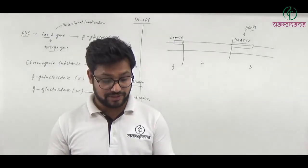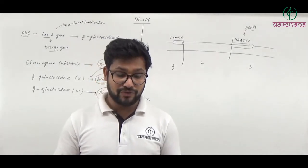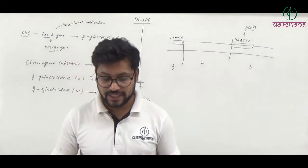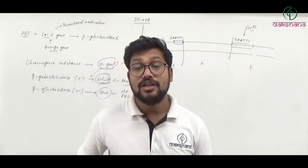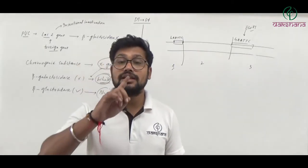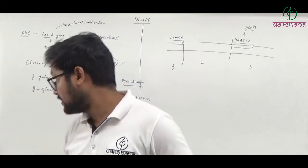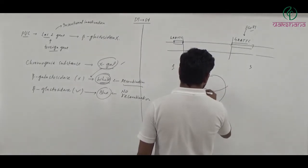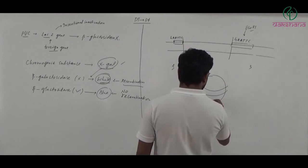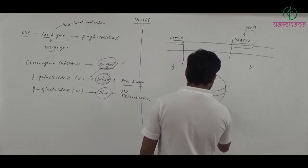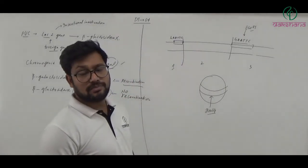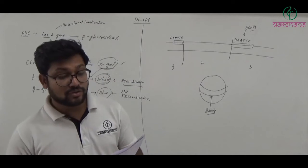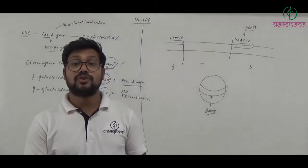Question number twenty-one: The number of nucleotides present in the repeating unit of chromatin — the repeating unit of chromatin is called a nucleosome. In a nucleosome, around a histone octamer, 200 base pairs of DNA are wrapped. The number of nucleotides would be 200 base pairs × 2 = 400 nucleotides. So question number twenty-one's fourth option — 400 — is the right answer.